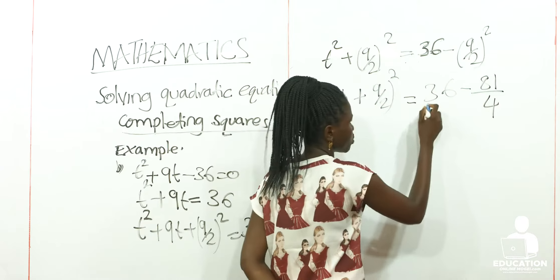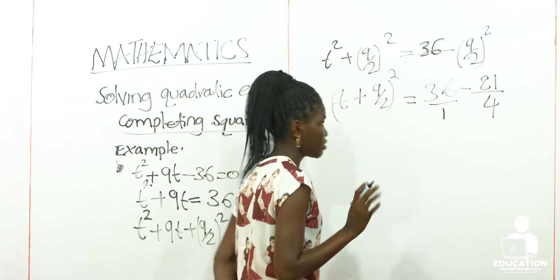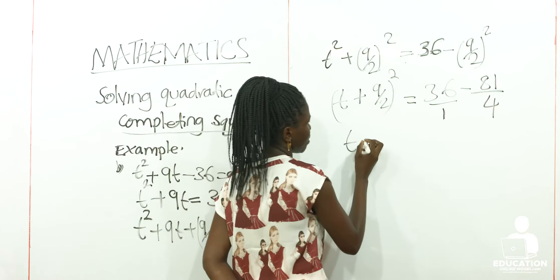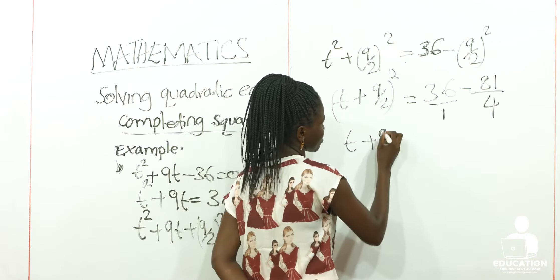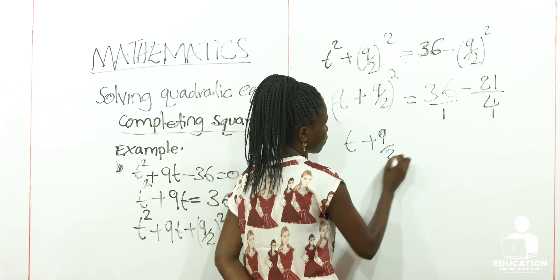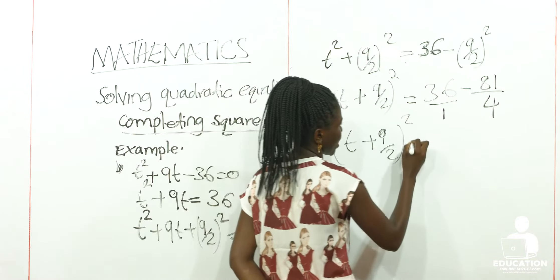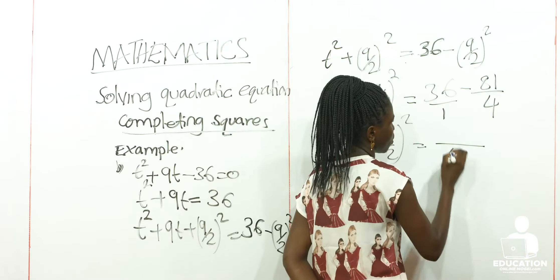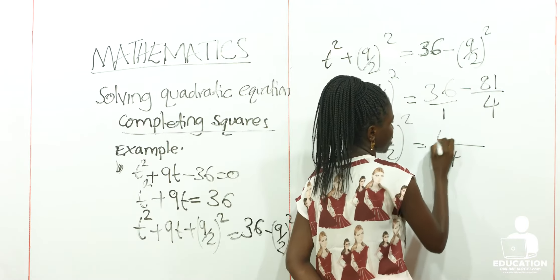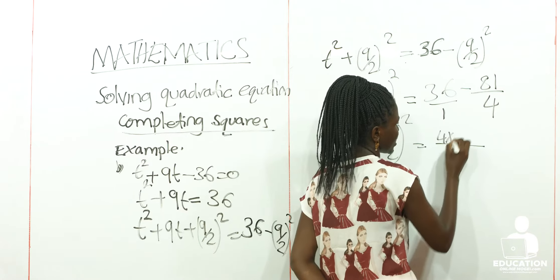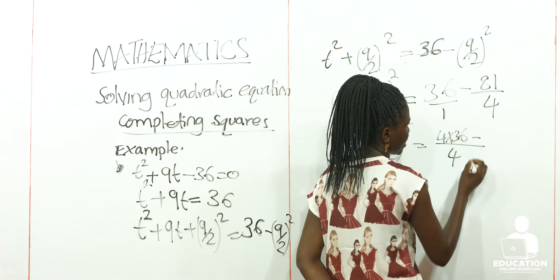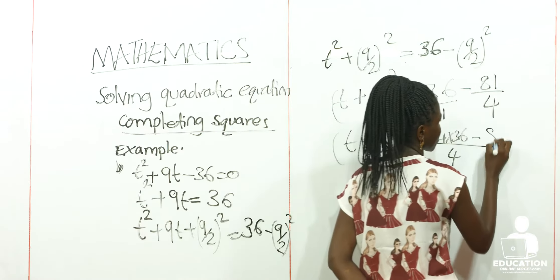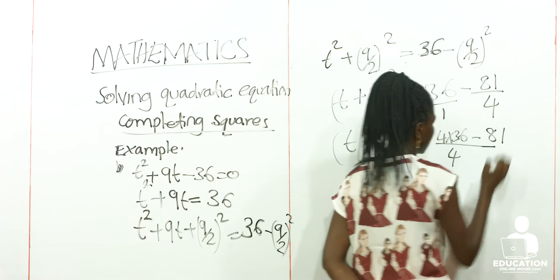So if we have this, we find the LCM for the 2. We shall have (t + 9/2)² is equal to, our LCM here will be 4, then we shall have 4 times 36 minus — 4 divided by 4 is 1 — so we shall have 81.